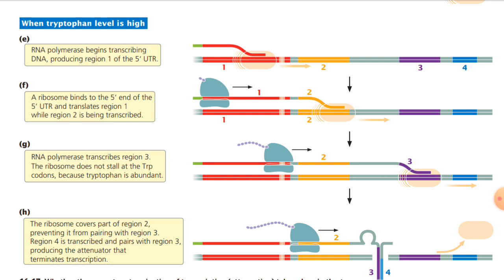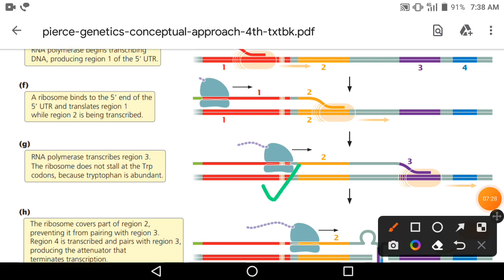Then RNA polymerase transcribes region 3. The ribosome does not stall at the tryptophan codons — वो stop नहीं होता — क्योंकि cell के अंदर sufficiently tryptophan available है। तो tRNA उन्हें मिल जाते हैं और ribosome आगे बढ़ता रहता है।